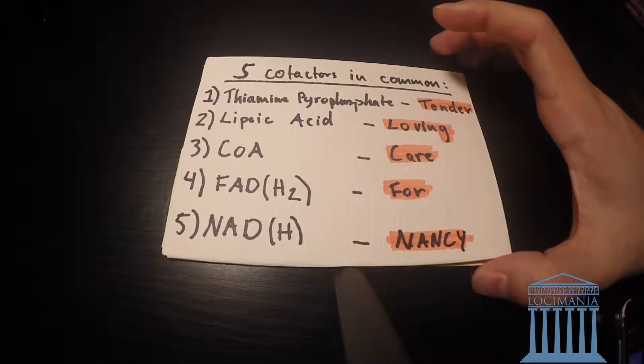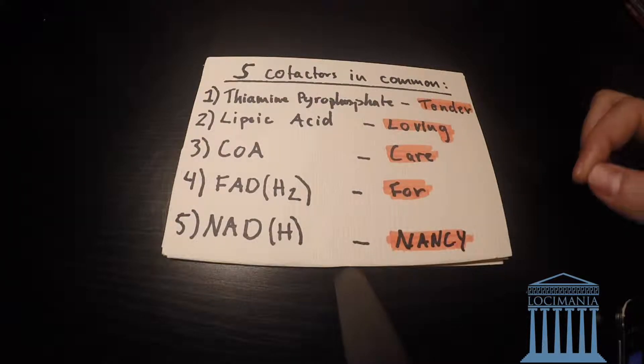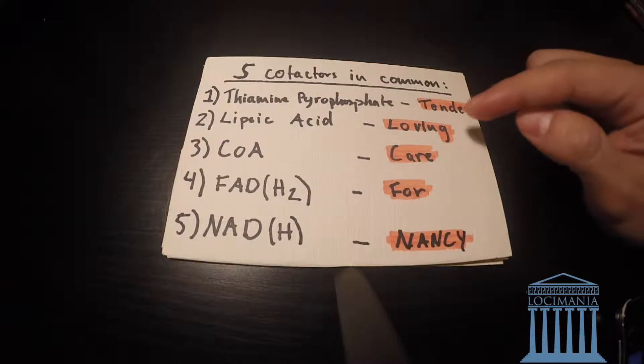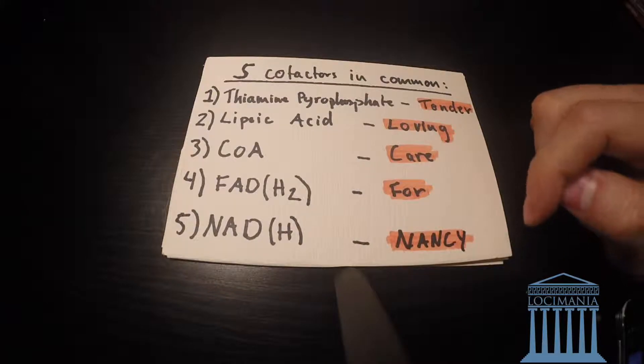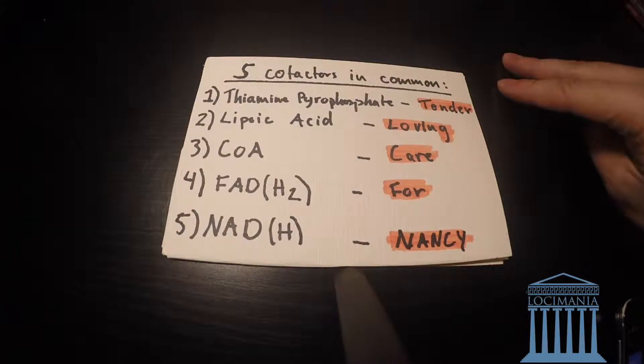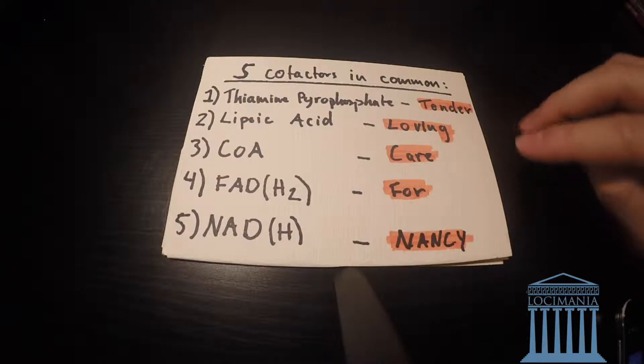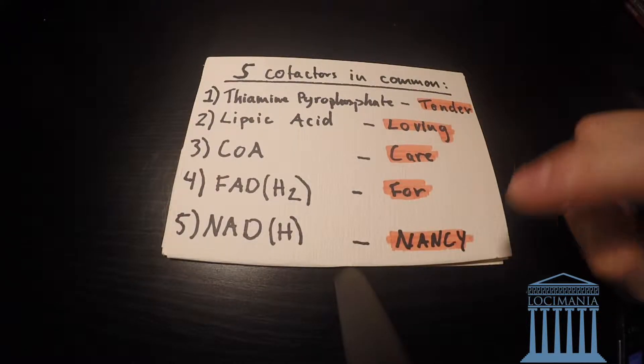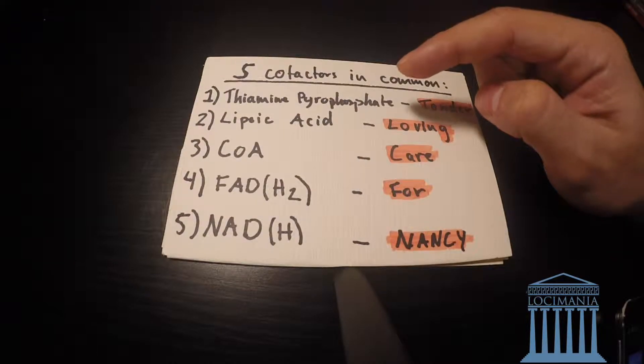Here's a mnemonic: tender loving care for Nancy. Tender is for thiamine, loving for lipoic acid, care for CoA, for is for FAD, and Nancy for NAD. That's how you can memorize these five cofactors.